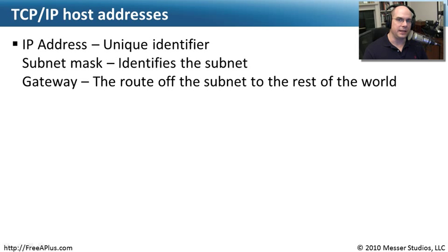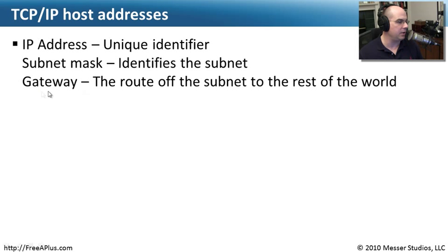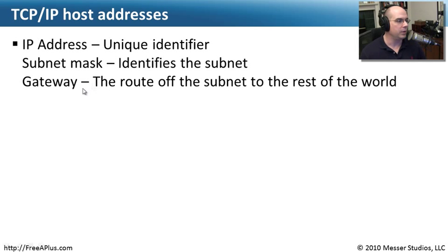If we were to configure the IP addressing information for your computer manually rather than automatically, we would need an IP address first, so that we can uniquely identify your computer. We also need a subnet mask, which is used in a calculation along with the IP address so your computer knows what subnet it belongs to. The last thing we need is the gateway — the IP address of a device on your network that routes information outside your local network to the rest of the world. With those three things, you can communicate in and out of your local network.